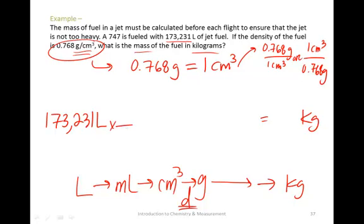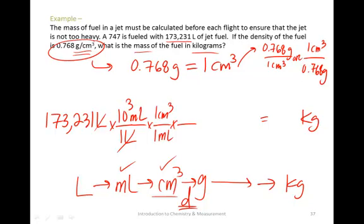First things first, let's convert liters to milliliters. I know that in one liter, I have 10 to the third milliliters. I'll cancel out my liters. I know that the definition of a milliliter is one centimeter cubed. So, one centimeter cubed, one milliliter. And then, I'm going to use my density, 0.768. I want centimeters cubed on the bottom, grams on the top.